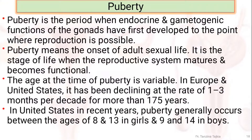In the United States in recent years, puberty generally occurs between the ages of 8 to 13 years in the case of girls, and in the case of boys this is 9 to 14 years.